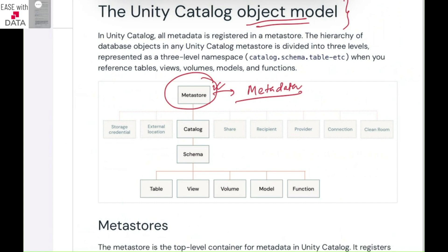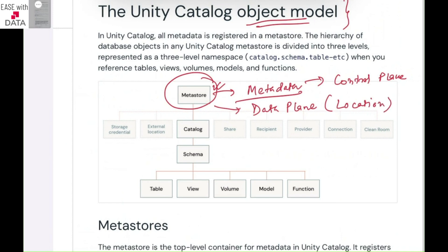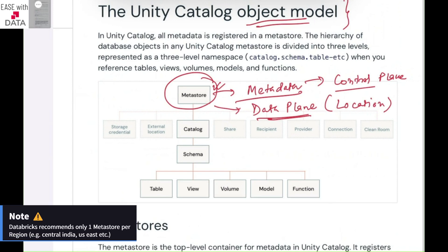Metadata captures your schema, your access control list, your permissions, and all sorts of things. This metadata is usually stored on the control plane. The data for a metastore is stored at the data plane side — this is the location that you define while defining a metastore. The metadata is stored at the control plane side and your data is stored at the location at your data plane side.